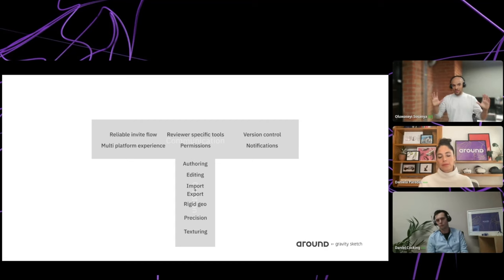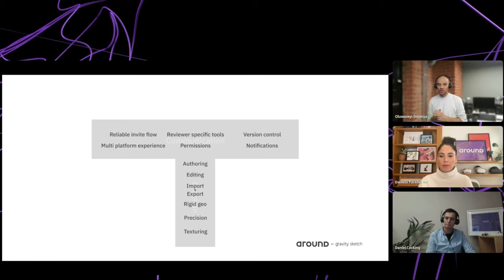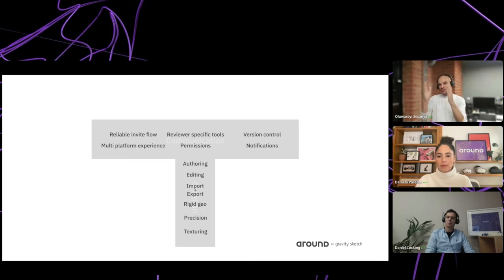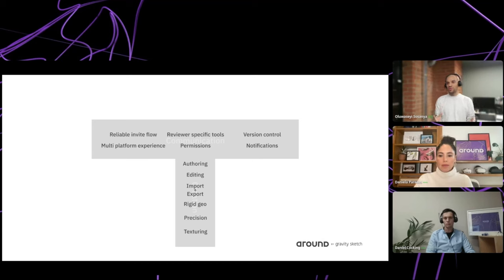Looking at what we're trying to do as a business — we're building a reliable multi-platform experience on the communication side, with great camera perspectives, viewpoints, and screen creation. In the future, things like version control and notifications. Going deep: first and foremost great authoring tools, editing content, ingesting content into the platform, and then getting into precision workflow. We haven't completed this vision, but we're well on our way.